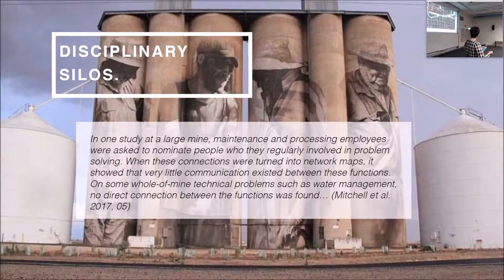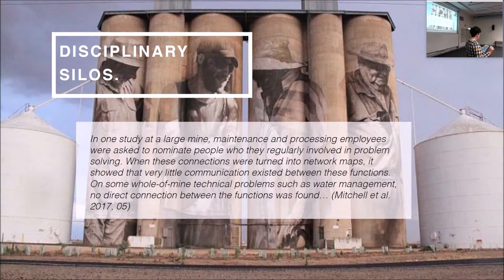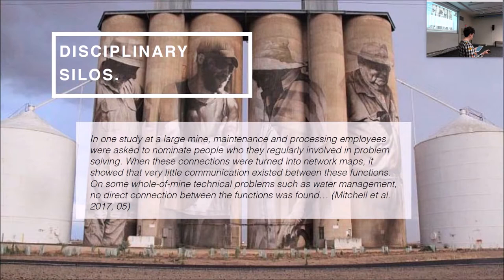In a report released by Ernst & Young and SMI in 2017, researchers interviewed more than 60 senior mining executives. Both anecdotal evidence and mapping of internal communication networks pointed towards a problem with siloed communication. In one study, maintenance and processing employees were asked to nominate people regularly involved in problem solving. When these connections were turned into network maps, it showed that very little communication existed between these functions — on some whole-of-mine technical programs such as water management, no direct connection between the functions was found. Topics like water management exist outside disciplinary boundaries as complex umbrellas of science, politics, economy, law, religion, technology, and fiction. Disciplinary boundaries are human constructs, but within our traditional knowledge approaches we remain bound to them.